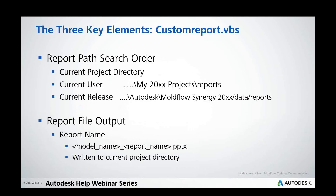The custom report VBS script locates your RPT file by searching folders in this order: first the current project directory, then the current user directory, and lastly the current release directory. These are the only folders where you can save your RPT files. The report output uses the model name underscore report name, and it gets written to your current project directory.